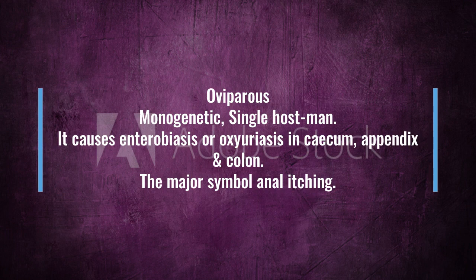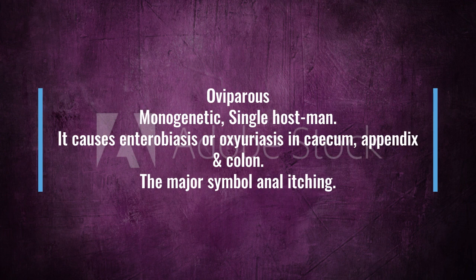This is monogenetic, and the host is man. Its name is Enterobius, so the disease it causes is enterobiasis. It infects the caecum, appendix, and colon. The major symptom is itching at the anus, because egg-laying occurs at the anus. This causes irritation, so anal itching is the biggest symptom of this infection.